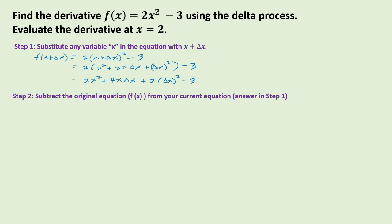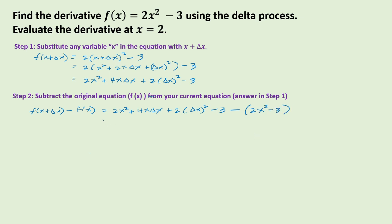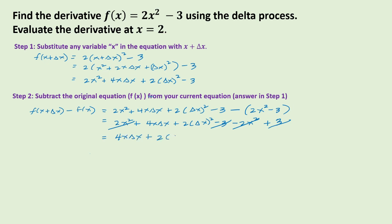Step two is to subtract the original equation from the current equation we have in step one. So we have f of x plus delta x minus f of x. From step one we have 2x squared plus 4x delta x plus 2 delta x squared minus 3, minus the given function 2x squared minus 3. Simplifying, the 2x squared and negative 3 cancel, leaving us with 4x delta x plus 2 delta x squared.